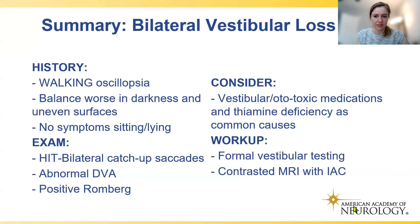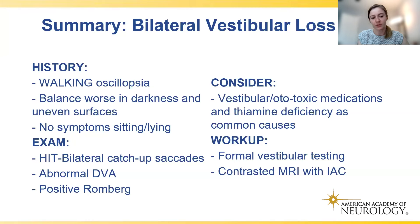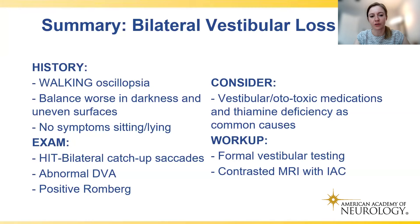Summarizing Case 1: this patient presented with walking oscillopsia and balance worsened in darkness and on uneven surfaces, with no symptoms sitting or lying. On exam he had a bilateral abnormal head impulse test with bilateral catch-up saccades, abnormal dynamic visual acuity — another way to test the vestibulo-ocular reflex — and a positive Romberg sign. Consider vestibular ototoxic medications and thiamine deficiency as common causes. Workup includes formal vestibular testing and contrast-enhanced MRI brain with IAC protocol to rule out bilateral tumors like vestibular schwannomas.